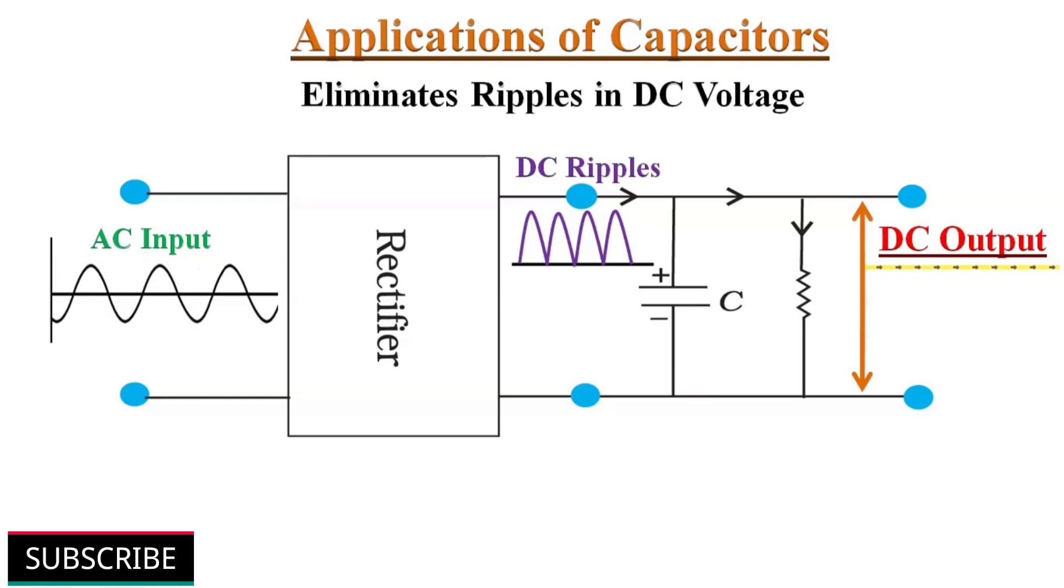Capacitors can also eliminate ripples. If a line carrying DC voltage, for example rectifier output, has ripples or spikes in it, a capacitor can even out the voltage by absorbing the peaks and filling in the valleys.